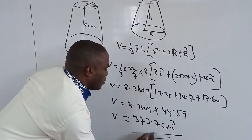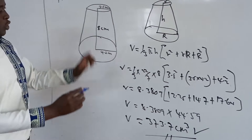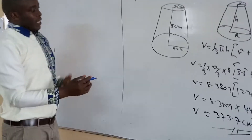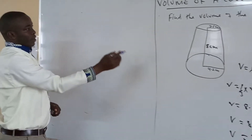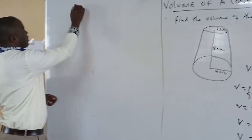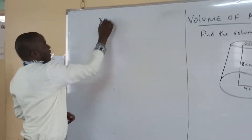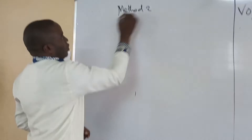That is the shorter method. We can now look at the other method — we can see the other method where we involve similarity, and see how it works. We'll call it Method 2.